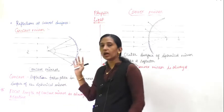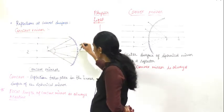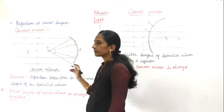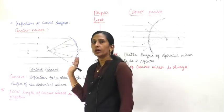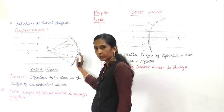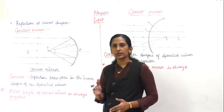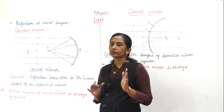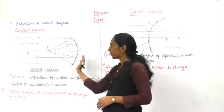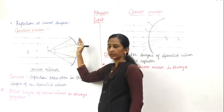Now here you can see the concave mirror and how it reflects light. Concave mirror means a cave-like structure which reflects light. The outer surface is coated and the inner surface acts as the reflecting surface. The light rays are falling on the concave mirror. As you have studied, if light falls on a mirror it reflects back. In a plain mirror it was simple, but here the surface is not straight - it is curved.